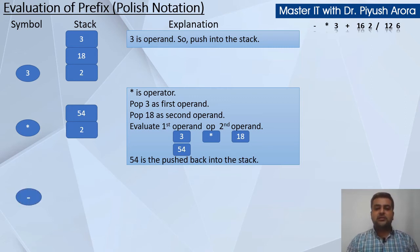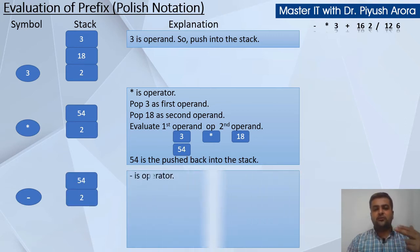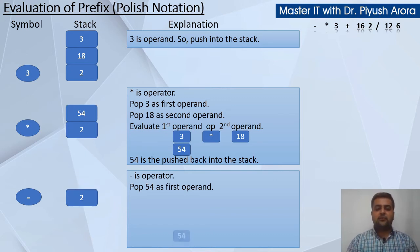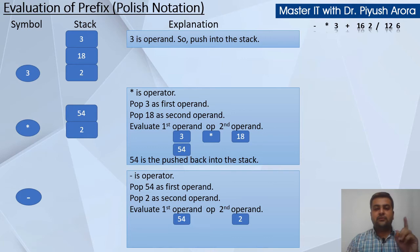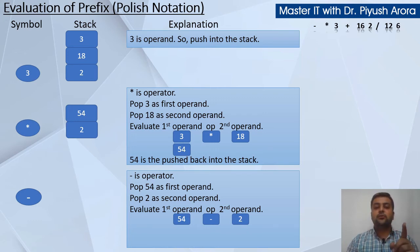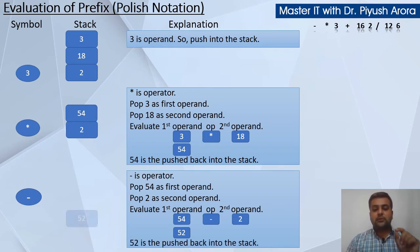Next — minus. Minus is an operator. Stack ke andar do values hain. Now pop 54 as the first operand. Next pop 2 as the second operand. Evaluate: first operand op second operand — op is minus, so 54 minus 2 equals 52. Please note: 54 minus 2 is 52, but 2 minus 54 is not 52 — toh aapka answer galat aajata. Toh aapko 54 minus 2 hi karna hai. So it is 52, and 52 is pushed back into the stack.